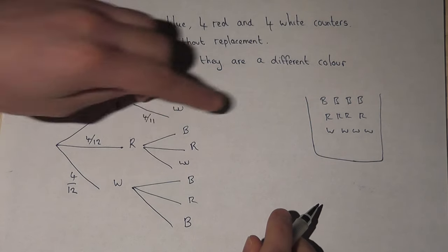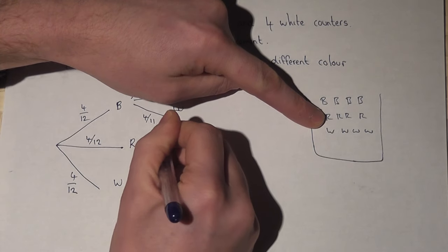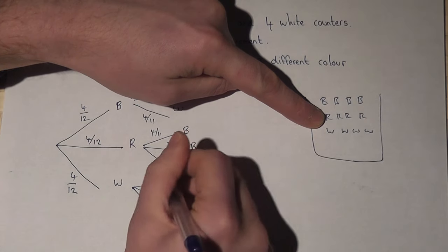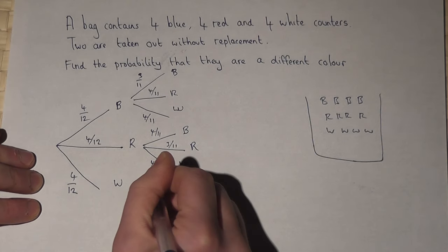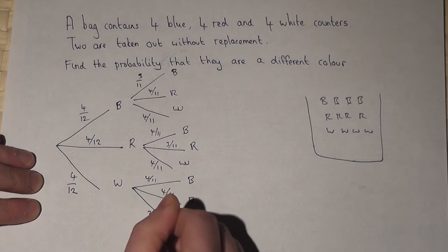If a red is taken out then blue is now four elevens, a red is now three elevens and a white four elevens. And then if a white is taken out it'll be four elevens, four elevens, three elevens.